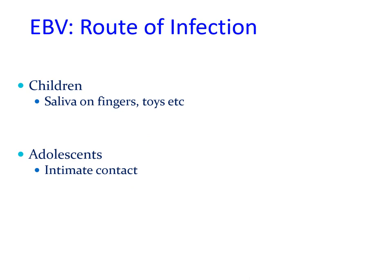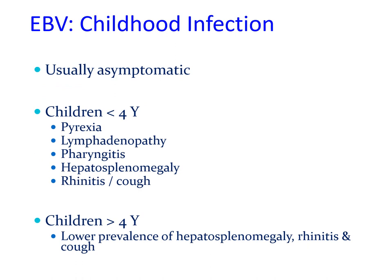Epstein-Barr virus infection can be seen in children as well as adults. In children, the route of infection is saliva on fingers, toys, etc., whereas in adolescents and adults, intimate contact is usually responsible for transmission. Childhood infection with Epstein-Barr virus is generally asymptomatic, but in children less than 4 years of age it can lead to pyrexia, lymphadenopathy, pharyngitis, marked hepatosplenomegaly, rhinitis, and cough, whereas in children over 4 years old there is a lower prevalence of hepatosplenomegaly, rhinitis, and cough.